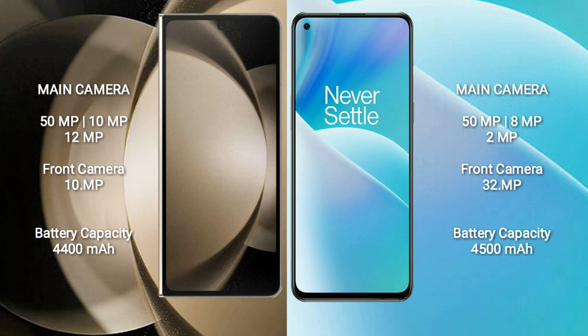Samsung Galaxy Z Fold 5 rear-side triple camera setup: 50MP plus 10MP plus 12MP, and a front camera of 10MP. OnePlus Nord 2T rear-side triple camera setup: 50MP plus 8MP plus 2MP, and a front camera of 32MP.